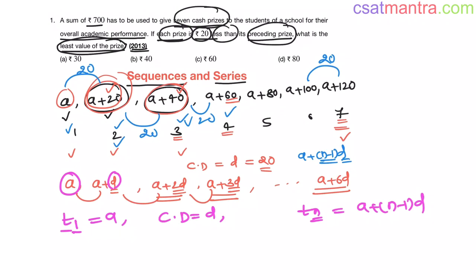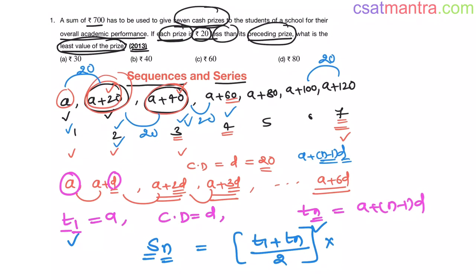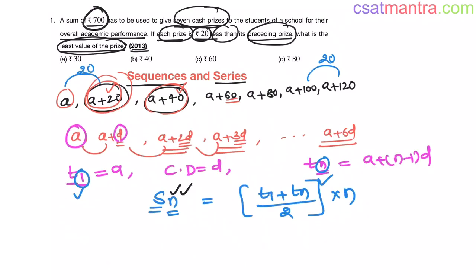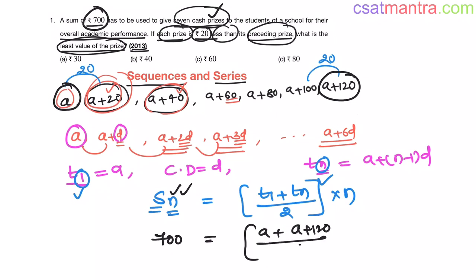The sum of n terms — from T1 to Tn — is represented as Sn. The sum of n terms equals the average of the first term and the last term, multiplied by the number of terms. So Sn equals (T1 plus Tn) divided by 2, into n. Here the sum is 700 rupees for 7 cash prizes. The first term is A and the last term is A plus 120, so we have: 700 equals (A plus A plus 120) divided by 2, into 7.